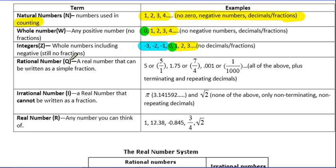Our rational numbers are all of the above, so all of these things, plus now we finally get the decimals and fractions. A very simple definition of rational numbers is quite simply a number that can be written as a fraction.